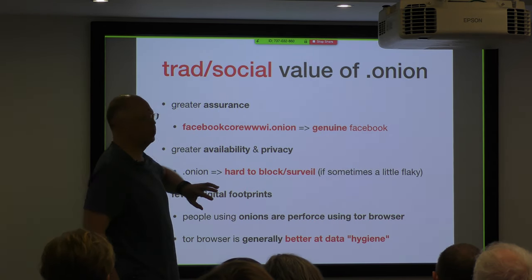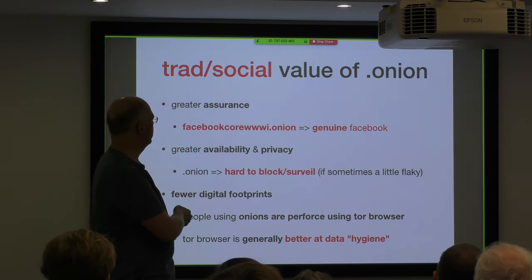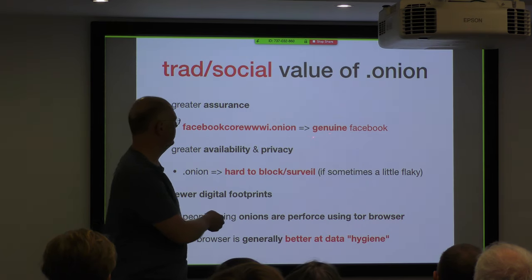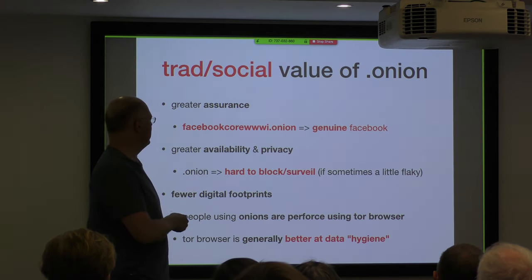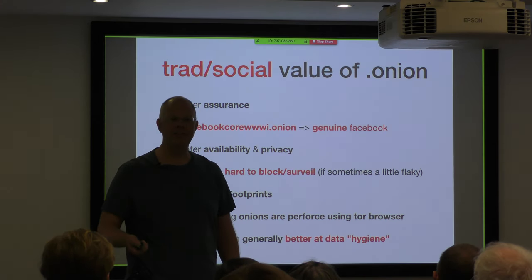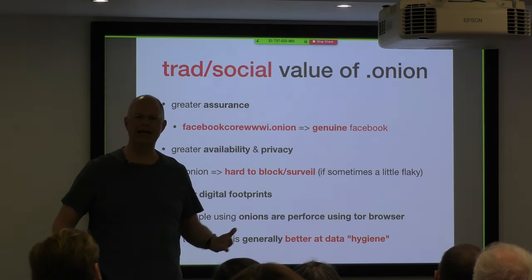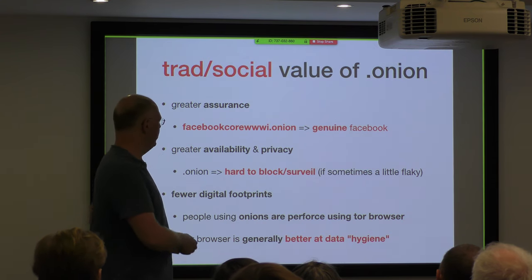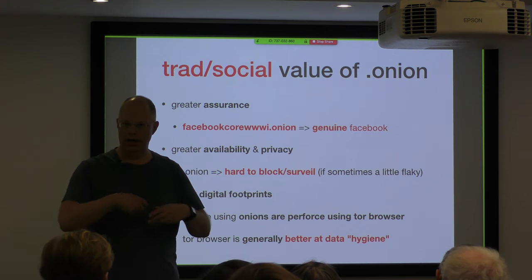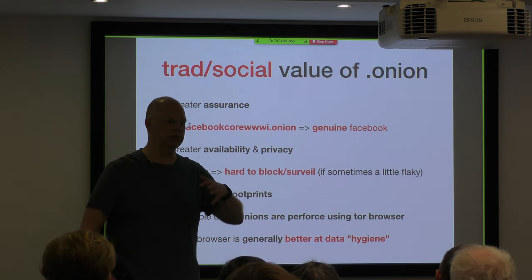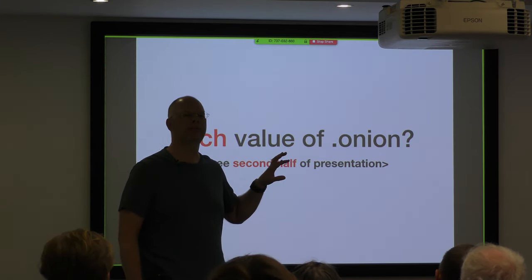The traditional social value of Onion is that you have a connection to the genuine Facebook — this is the Facebook Onion address, facebookcore www.onion, and that is definitely Facebook who owned that one. It is highly available, highly private, hard to surveil. If you're trying to read news or talk to your family, it can't be tampered with, blocked or interfered with. And there are fewer digital footprints, fewer cookies — it sort of reduces your digital exhaust trail.